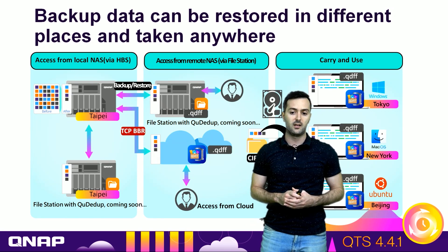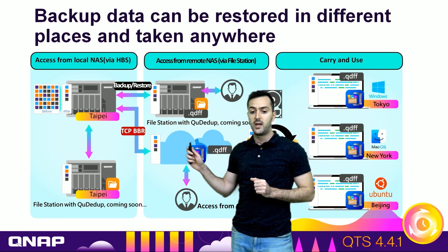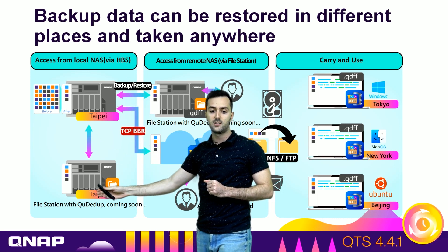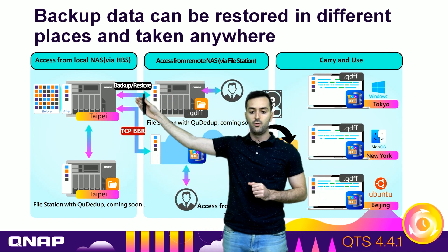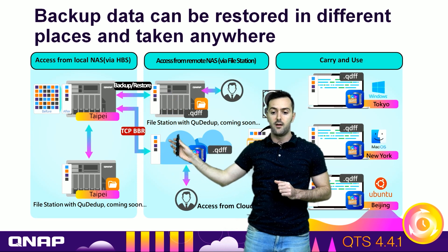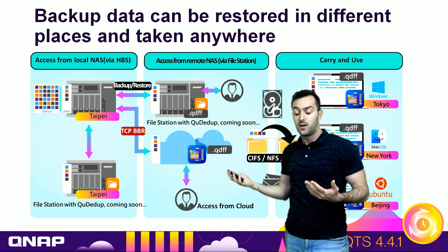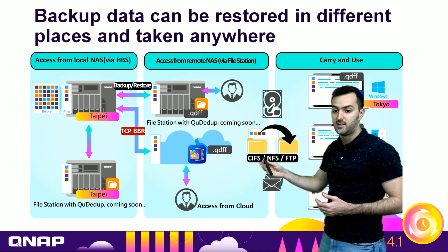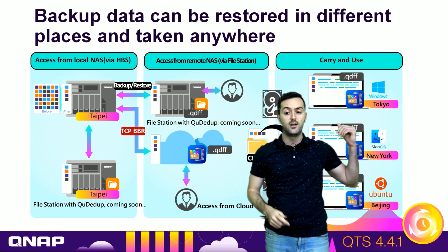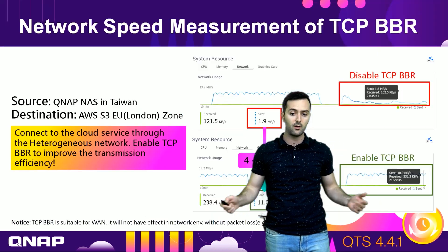The backup data can also be restored in different places and taken anywhere. For example, you can access from a local NAS to another local NAS, or go from one NAS to remote access via a remote NAS, and also to the cloud. From there you can use it very easily via SMB/Samba, NFS, or FTP on any computer — Windows, Mac OS, or Ubuntu Linux.